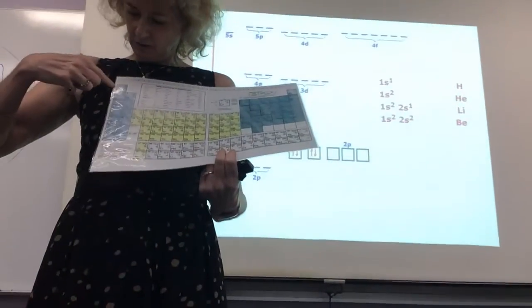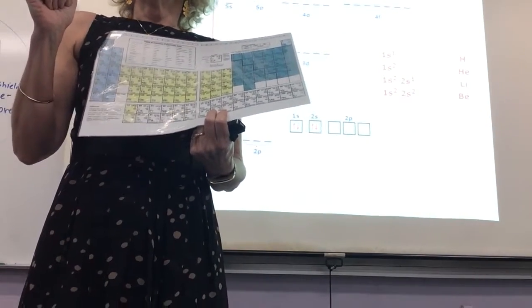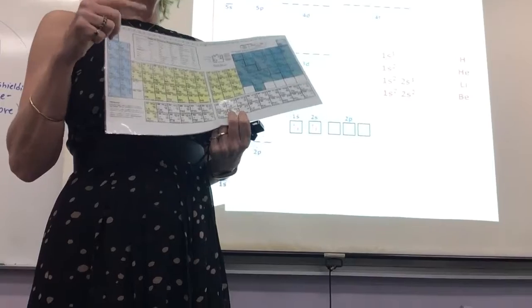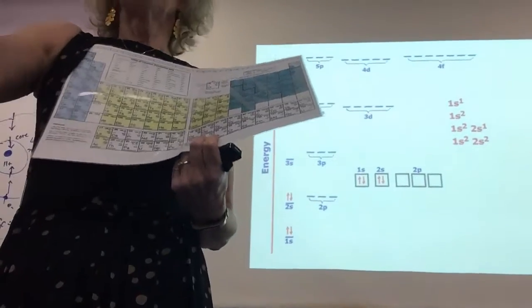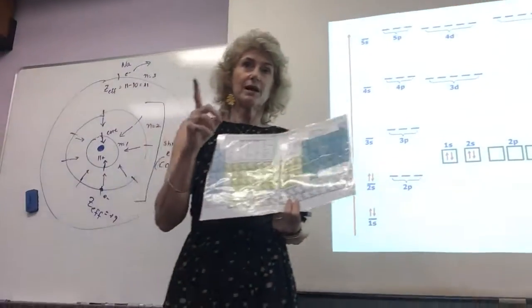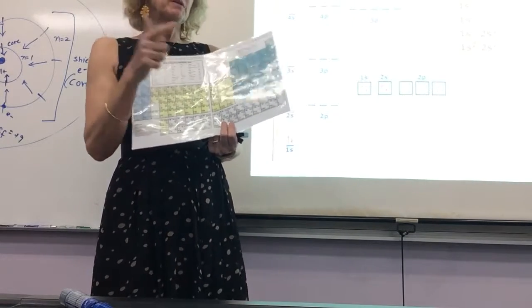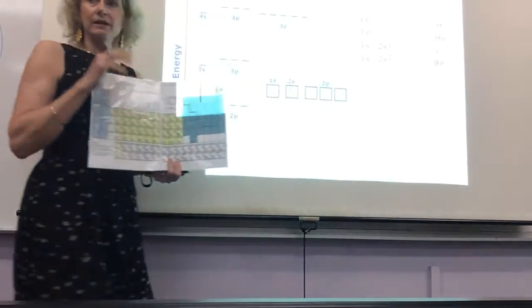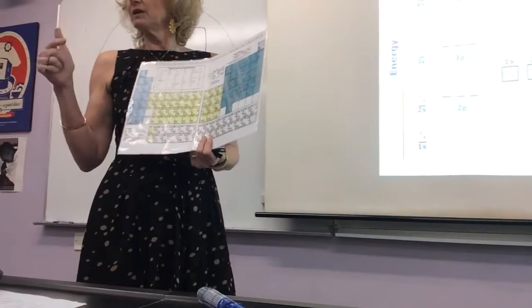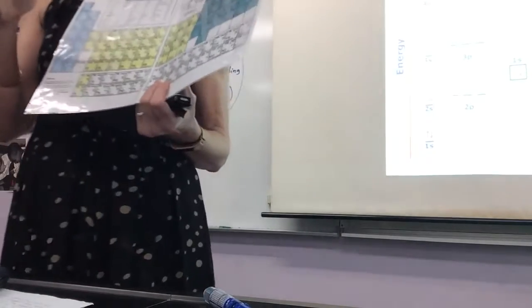The periodic trend in atomic size as you go across a period: it gets smaller. Now think back — in December it was okay to say neon is stable because it reached noble gas configuration. In January that's no longer sufficient. Each individual valence electron is being acted on by a very strong nuclear force because the nucleus gets bigger as you move across the period.